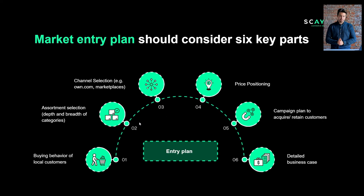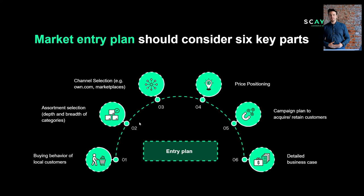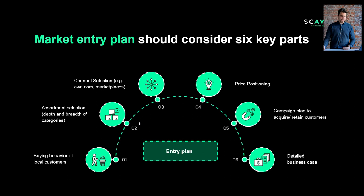Secondly, develop a market entry plan which considers six different parts. First, analyze the buying behavior of local customers. Second, based on this buying behavior, select the assortment that will perform best — finding your optimal product-market mix. Third, work with the marketing team to select channels that should perform best. Fourth, position your price — is the purchasing power lower or higher in this market, and is there room to adjust? Fifth, set up a campaign plan to acquire new customers in the first 12 months. And sixth, define a detailed business case around all of this.